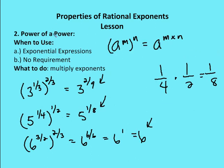Moving on — power of a power. I have a to the m, and I'm taking that all to the n. The base stays the same, and I multiply m times n. So if I have 3 to the 1 third, taken all to the 2 thirds, I multiply 1 third times 2 thirds, which gives me 3 to the 2 ninths. For 5 to the 1 fourth taken to the 1 half, 1 fourth times 1 half gives 5 to the 1 eighth.